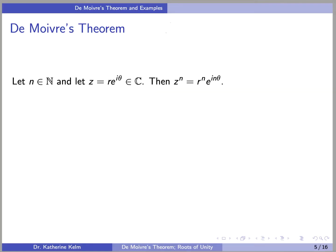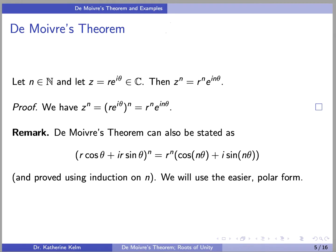Now we state de Moivre's theorem. Let n be a positive integer, and let z be expressed as r·e^(iθ). Then z^n = r^n · e^(inθ). This is very easy to prove in polar form: z^n = (r·e^(iθ))^n = r^n · e^(inθ). As a remark, de Moivre's theorem is often expressed in rectangular form: (r·cos(θ) + i·r·sin(θ))^n = r^n·(cos(nθ) + i·sin(nθ)), which is clearly equivalent.